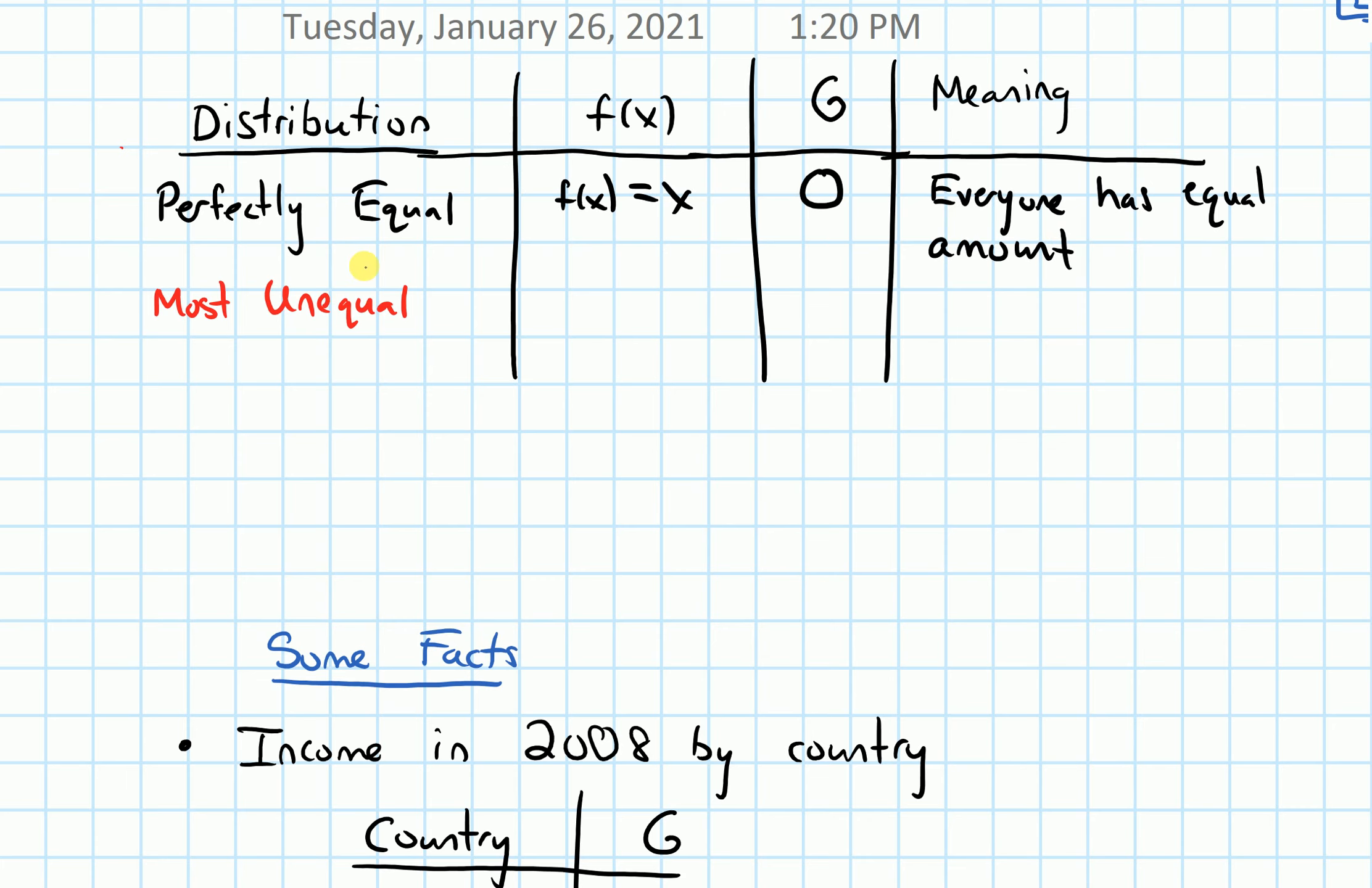In the most unequal situation, we would expect that the Gini index would be one. And what would our function be? Our function would have to be in a situation that would make that area as big as possible. For that to be the case, I need my function to be zero if x is not equal to one. It's got to be perfectly along the x-axis pretty much the whole way until I get to x equals one, and at x equals one, one of the properties of a Lorenz curve is when x equals one, the output also needs to be one.